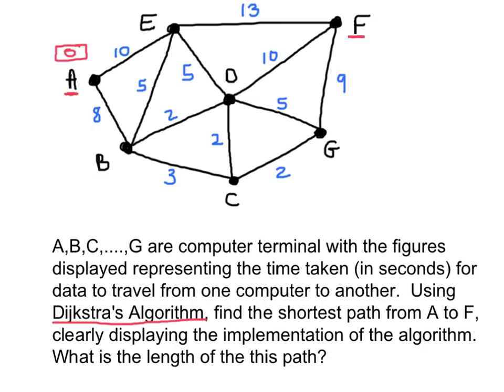What Dijkstra's algorithm does is it's a search — it searches out from A one step and finds the shortest path. It will search the route A→E and come back with a value of 10. It'll search the route A→B and come back with a value of 8. So A→B is the shorter route, and the algorithm travels down to B. I'm going to label B with the value 8, and put a little 1 here to show this is the result of the first search made by the algorithm.